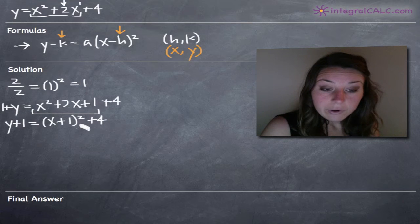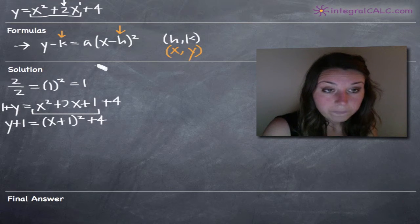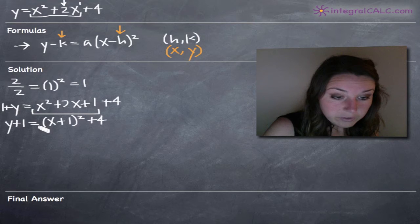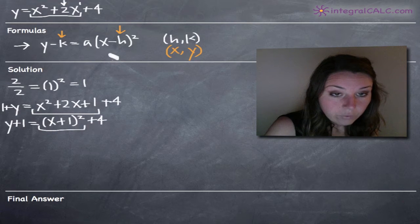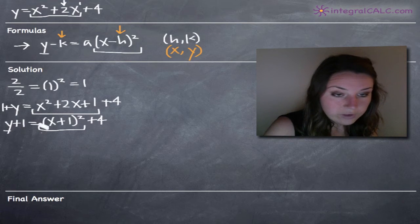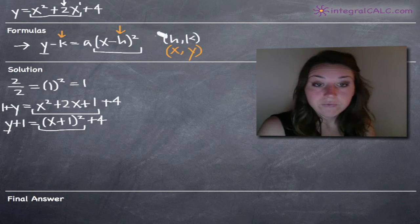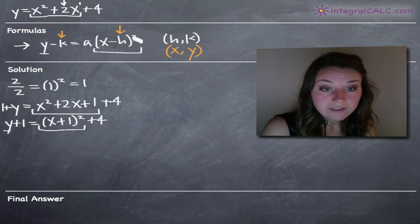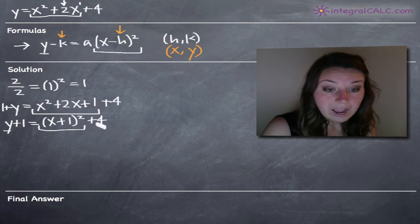Now our equation is starting to look really close to our formula. This x plus one squared represents x minus h squared, and we've got y over here and y over here, so we're doing pretty well.